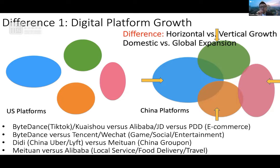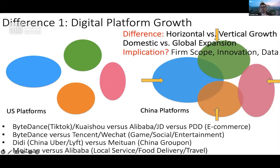The focus is also quite different. Chinese tech firms are more focused on domestic growth, whereas US firms are very much focused on global expansion. For instance, Microsoft and Amazon Web Services have a lot of growth coming from international markets. The implication of such a difference in growth mode is profound because it has impact on firm scope, on innovation mode, and very importantly to today's discussion, on the scope of data and all the AI applications based on such data.